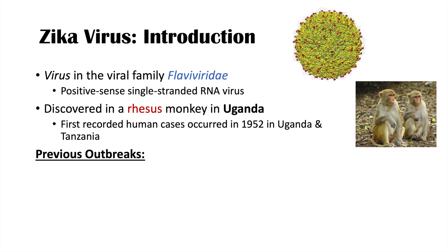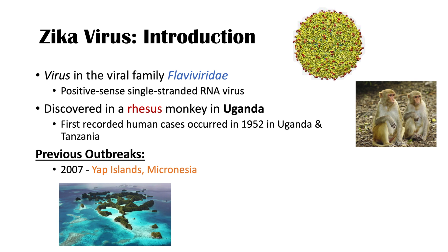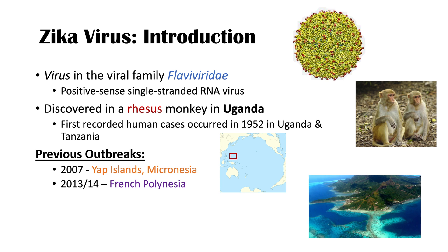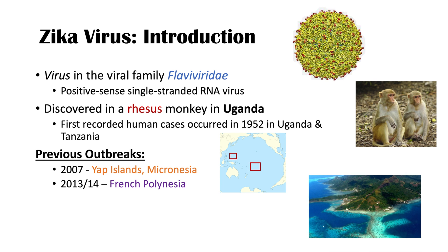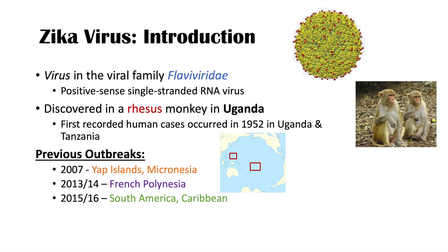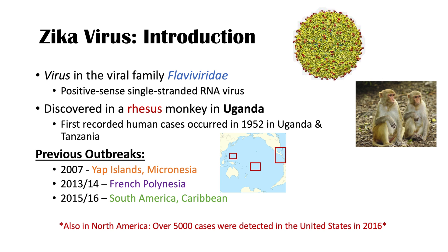Previous outbreaks of Zika virus include the outbreak in the Yap Islands of Micronesia in 2007. Here is a map showing the general location of the Yap Islands. In 2013 to 2014, the French Polynesian Islands had an outbreak affecting much of the infant population. The more recent outbreak, in 2015 to 2016, occurred in South America and the Caribbean.